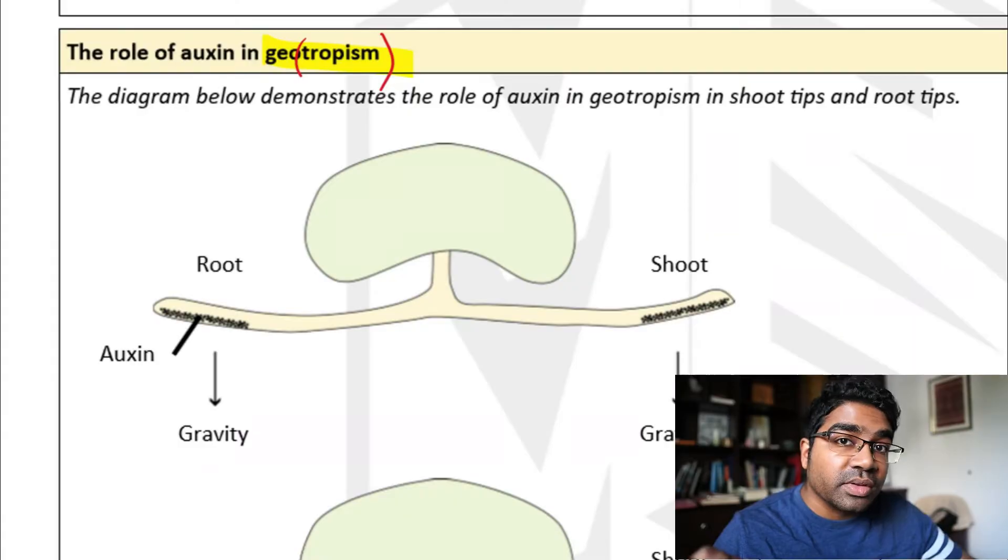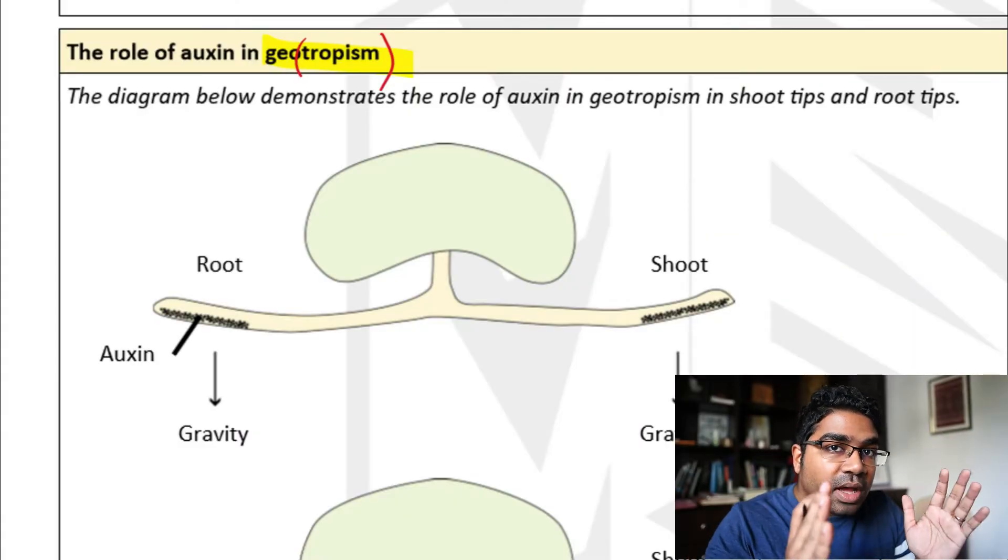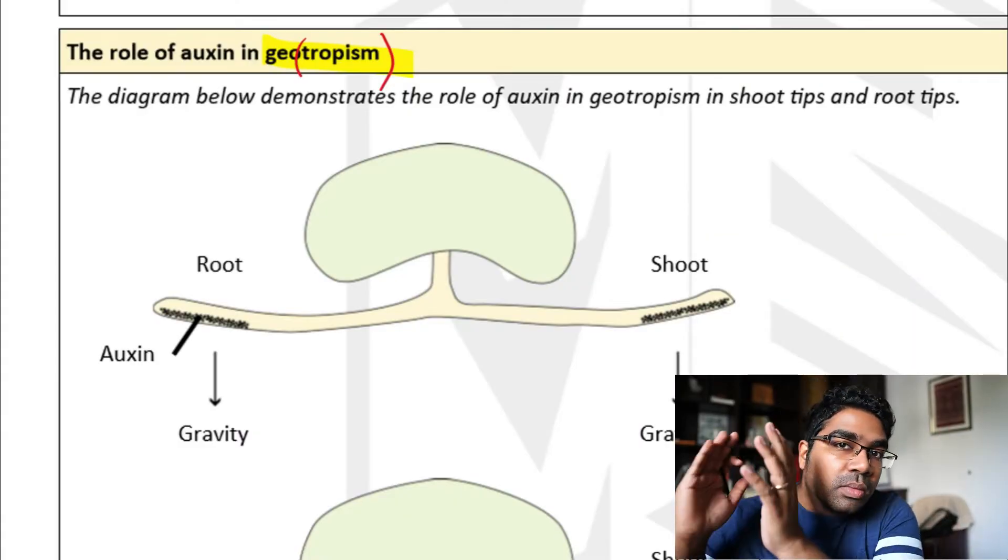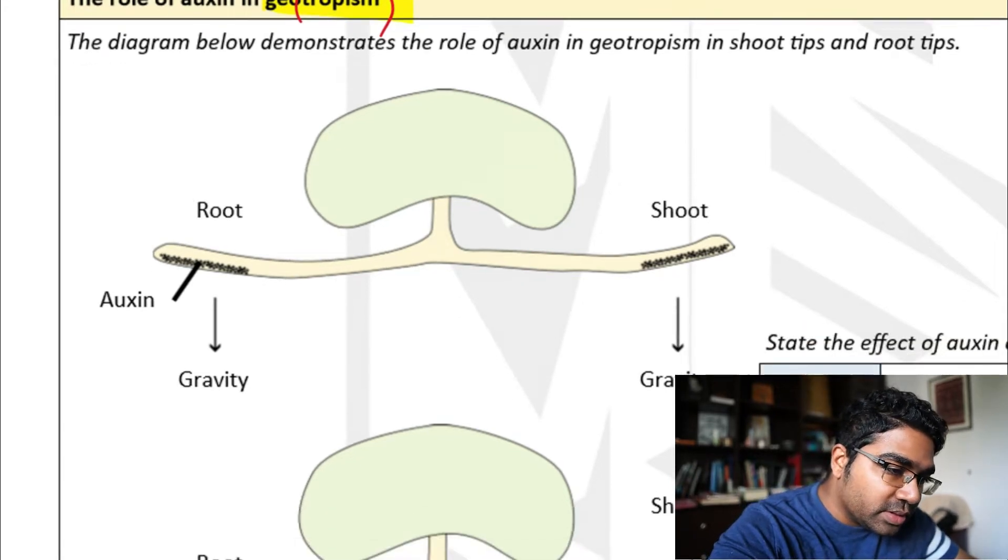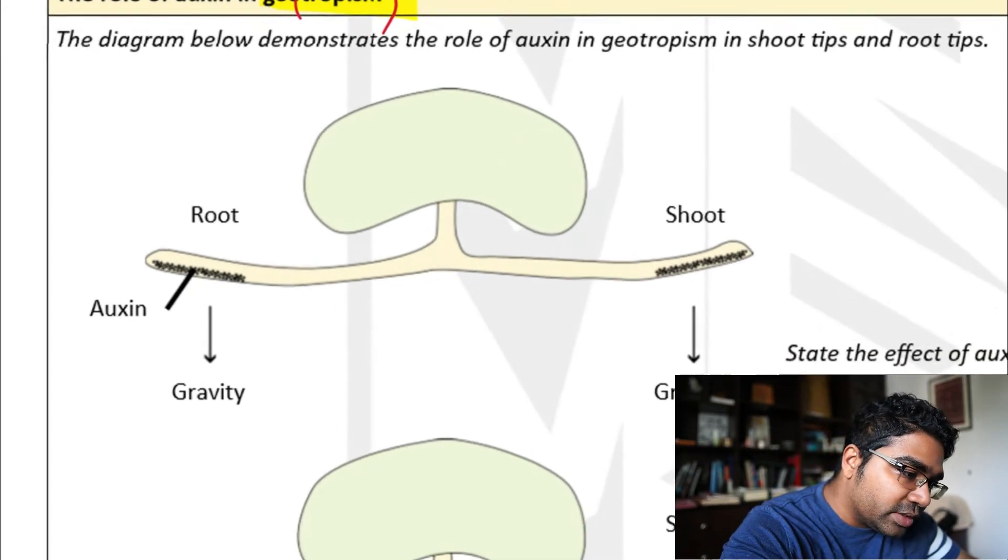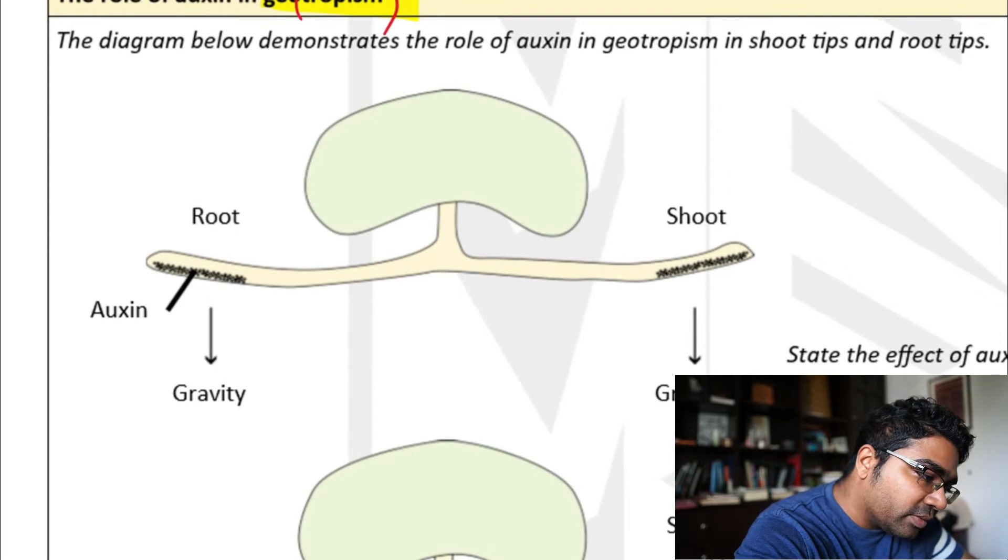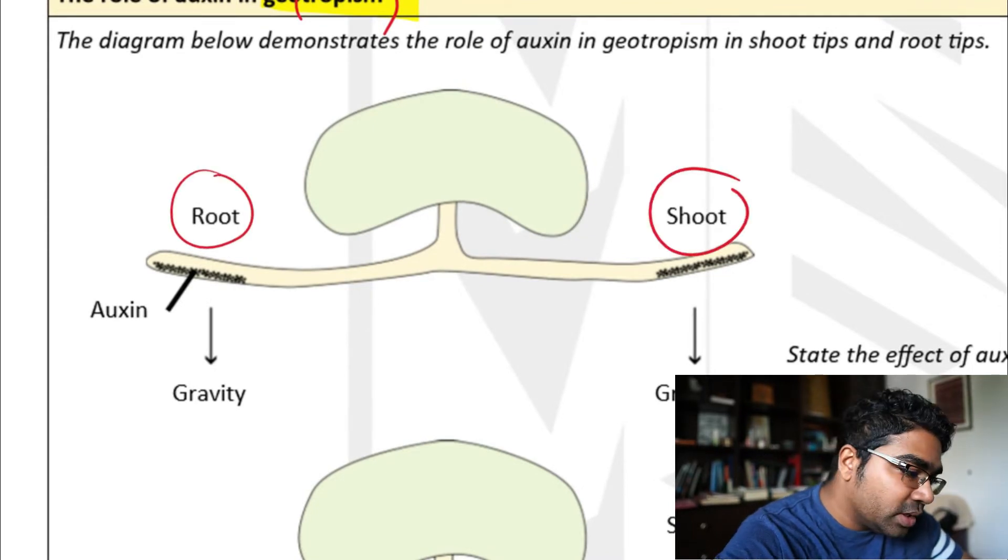So the response is growth either towards gravity or away from gravity. Let's look at this. This is a seed that is germinating, and we have the young root and the young shoot.